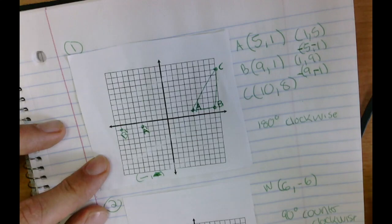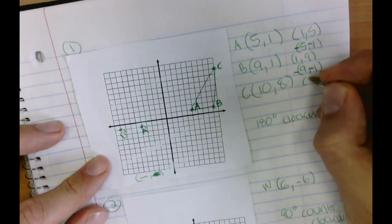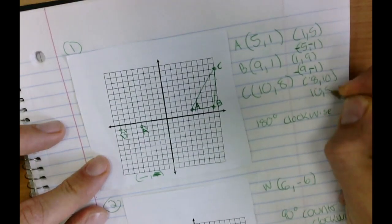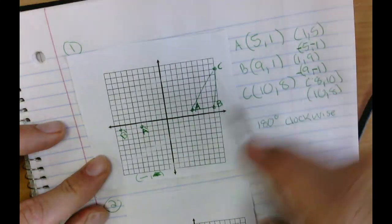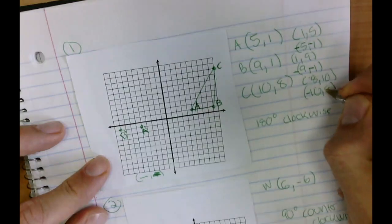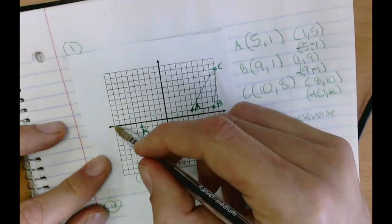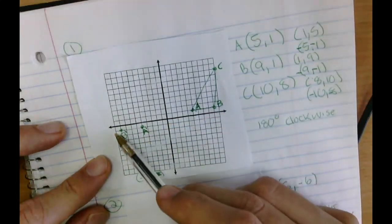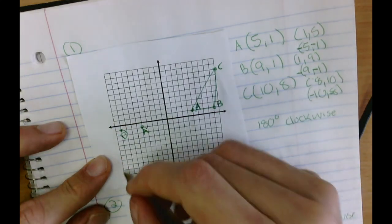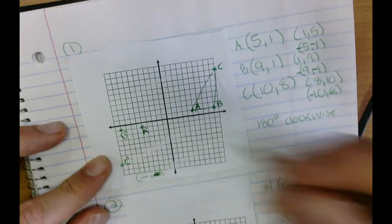Now let's do the same thing for C. We have 10, and we have 8. So we flip it once, we have 8, 10. And we flip it again, we get 10, 8. Because we're in the last quadrant, quadrant 3, we can add little negatives, like that. So now, we'll go negative 10, and negative 8. And we're going to label that C, with a little dash above it, like that.